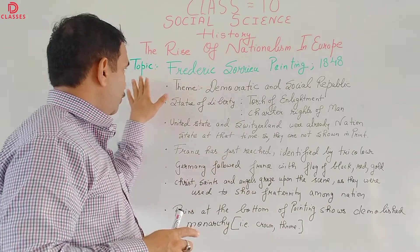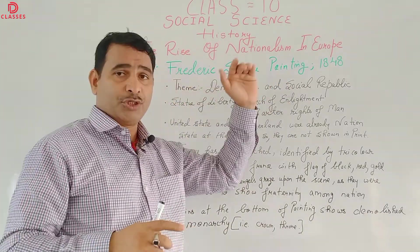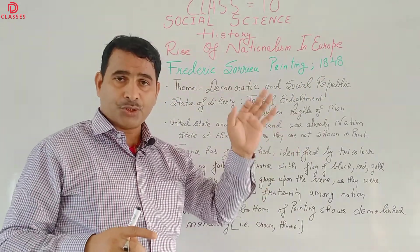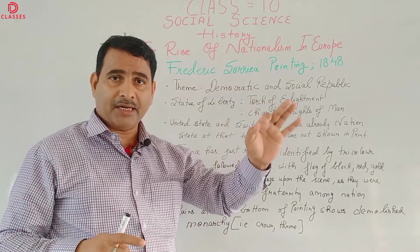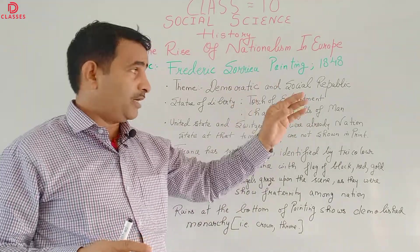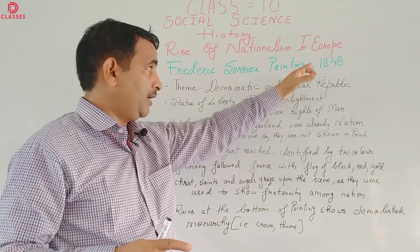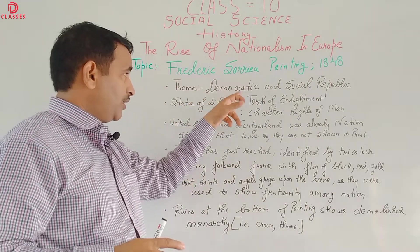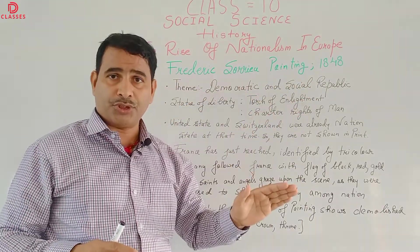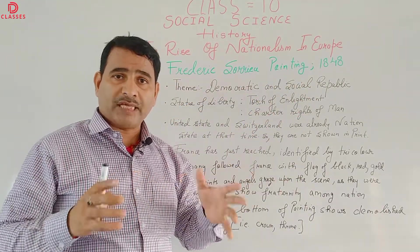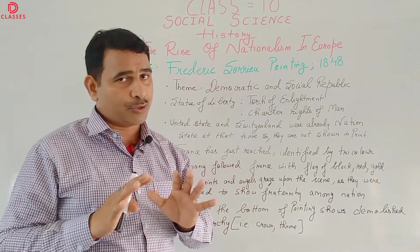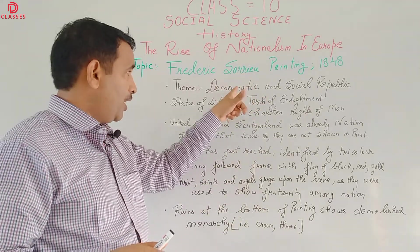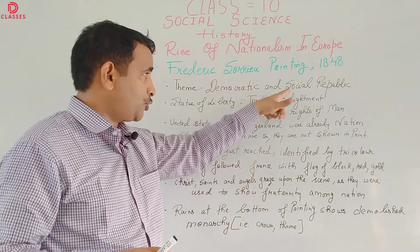In this video you are going to learn about the Frederic Sorrieu painting, which was made in 1848. Frederic Sorrieu, a French artist, made this painting in 1848. The theme of this painting is the democratic and social republic — this is the most important point. Every painting has its own theme, and the theme of Sorrieu's painting is that of a democratic and social republic.